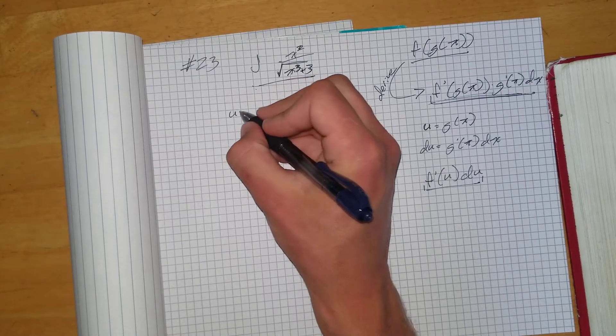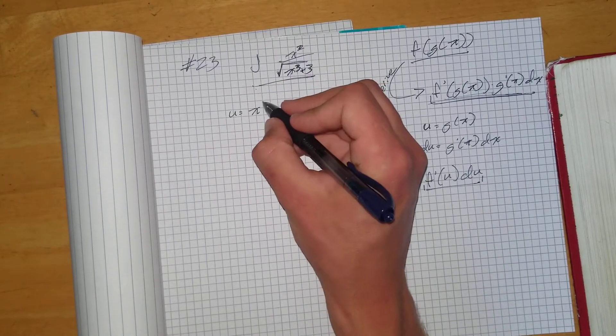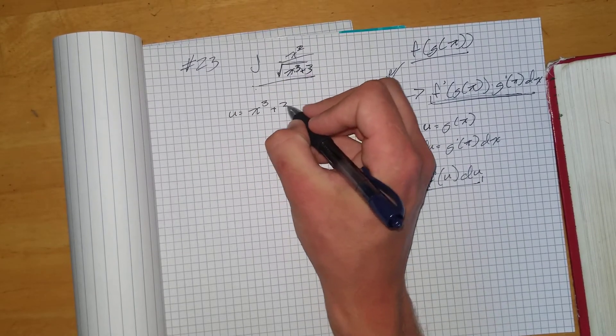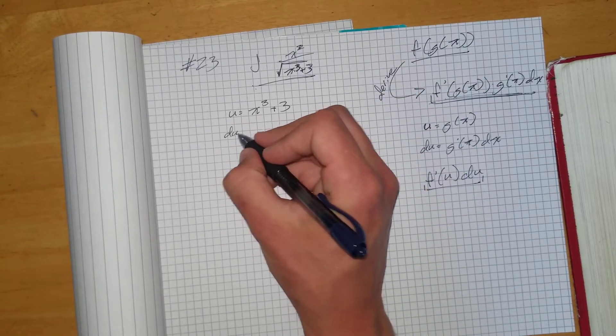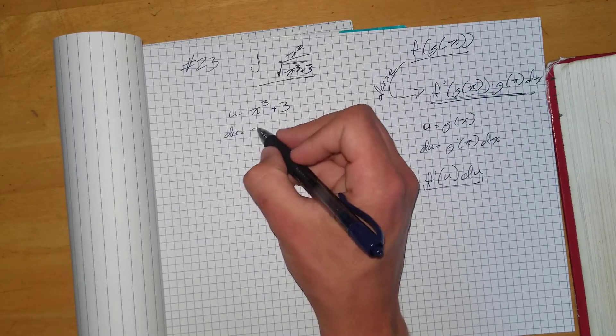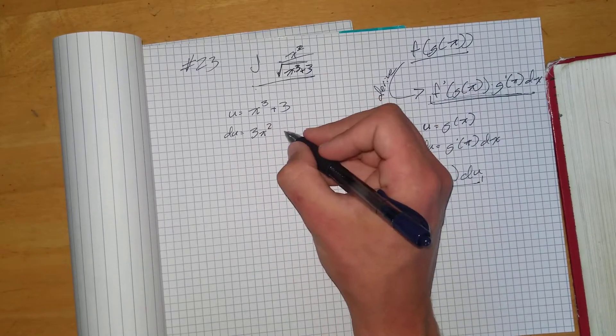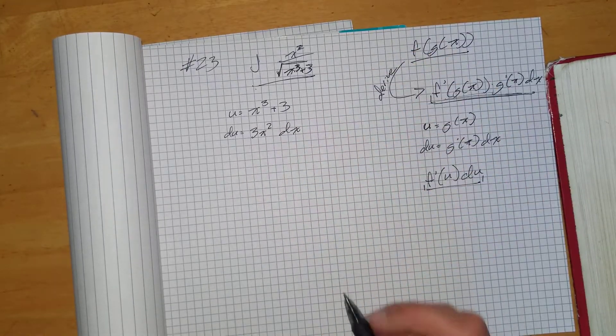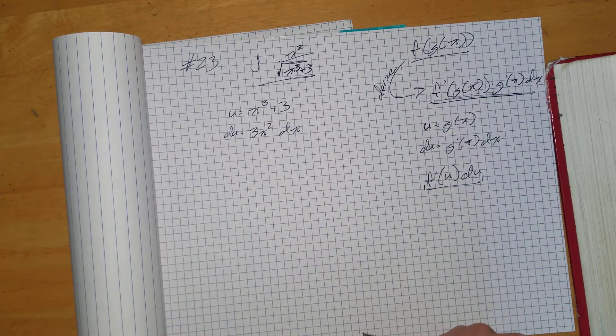So I'm going to sub u in for x cubed plus 3. And if you take the derivative of u, which is the derivative of this, we get 3x squared dx. 3 is just going to 0 when we derive it, so I didn't bother writing that.